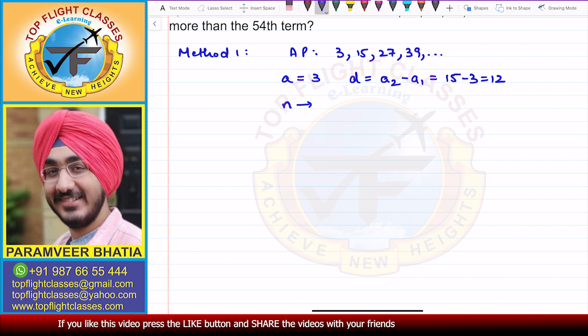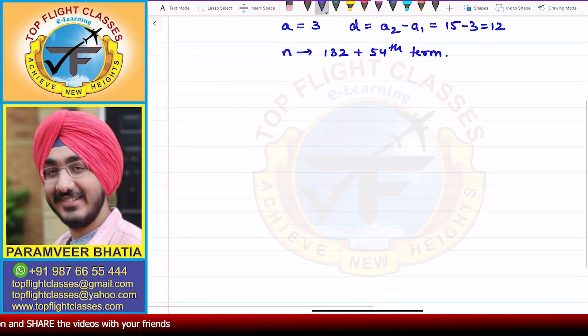Now, we have to find N, the Nth term which is 132 plus the 54th term. From here, we will find the 54th term.